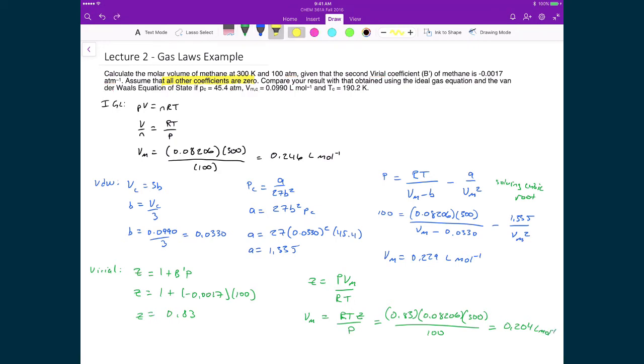So the final part to this question asks us to compare our results. So one way to do this is that we would just calculate a percent error. And then what we'll do is we'll take the Viral equation of state to be the precise value that we should get, and that we will compare it to what we got from the ideal gas law and the van der Waal equation of state. So if we start with the ideal gas law comparison, then what we would write is 0.246 minus 0.204 divided by 0.204 times 100. When we evaluate that, we get a percent error of 20.6%.